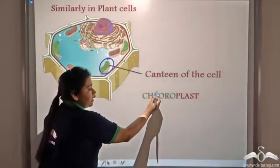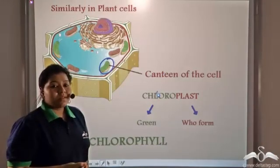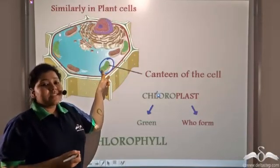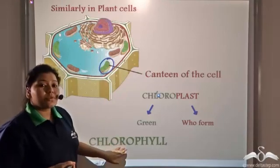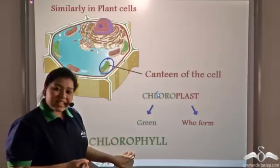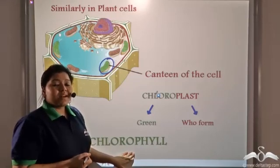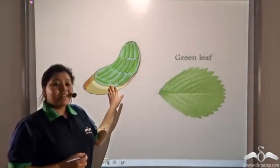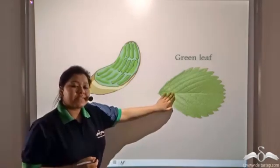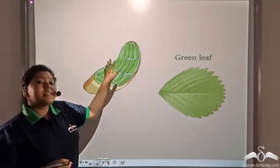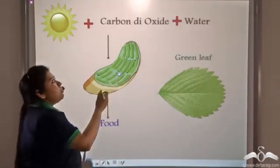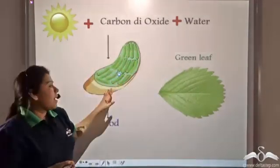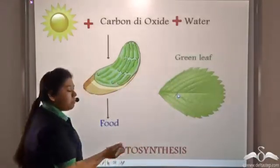Chloro means green and plast means who form. So what gives the chloroplast this green colour? There is a pigment present inside the chloroplast which is known as chlorophyll. This chlorophyll is green in colour and that is why even the chloroplasts are green coloured. These chloroplasts are found in abundance in green leaves. The chlorophyll present inside the chloroplasts absorbs sunlight and together with carbon dioxide and water manufactures food by the process of photosynthesis.